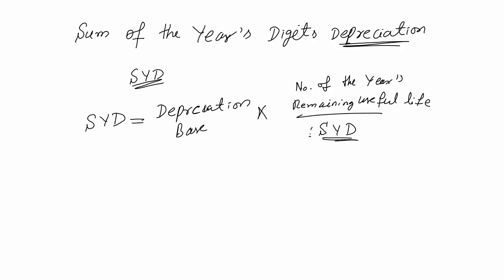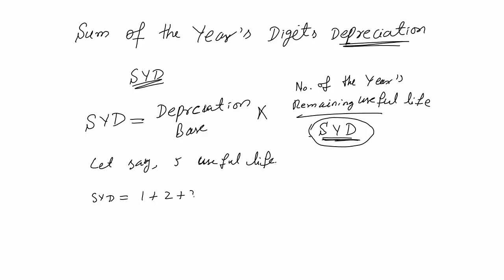We will only face a problem calculating the denominator number. For example, if useful life is 5 years, then to calculate the denominator sum of year digits, we count 1 plus 2 plus 3 plus 4 plus 5 and add these numbers. The result is 15. So if useful life is 5, we write 15 as the denominator.